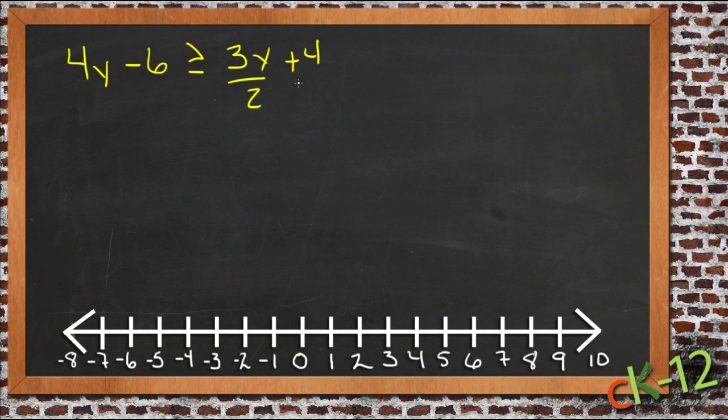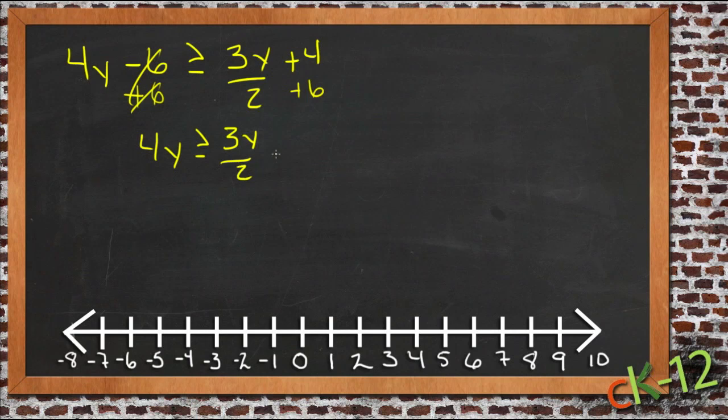So let's move our 6 over to the other side. We'll add 6 to both sides. This will cancel. Add 6. So then we'll have 4y is greater than or equal to 3y over 2 plus 10.